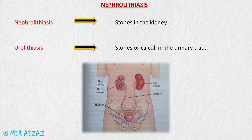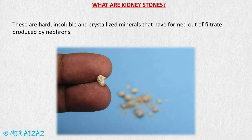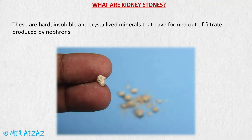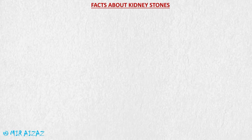This video is about nephrolithiasis, also called kidney stones or renal calculi. Nephrolithiasis means the presence of stones or calculi inside the kidneys, and urolithiasis means the presence of stones inside the urinary tract like the ureters, urinary bladder, or urethra. Kidney stones are hard, insoluble, crystallized minerals formed from the filtrate produced by nephrons — the structural and functional units of the kidneys. When salts and minerals are present in excess amounts in the urine, they may get crystallized and form kidney stones.